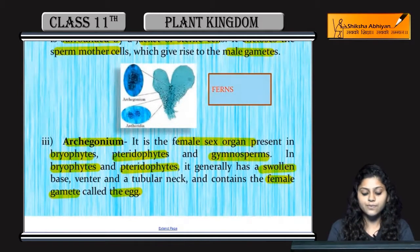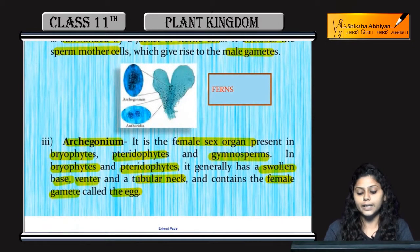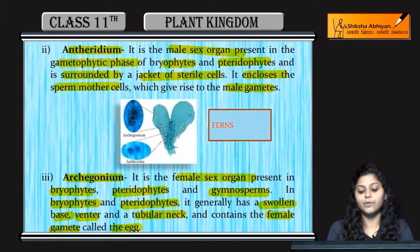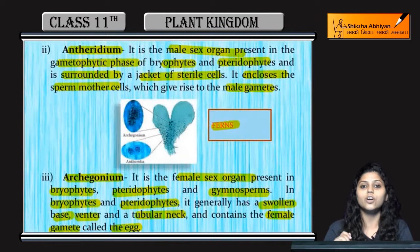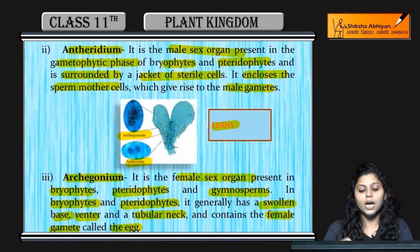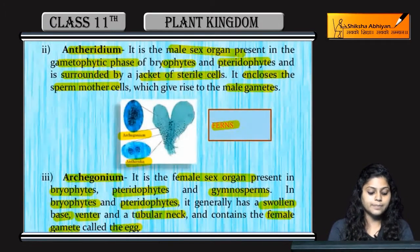The base of the Archegonium is a swollen venter with a tubular neck structure. Both Antheridium and Archegonium are present — Antheridium produces male gametes and Archegonium produces female gametes.